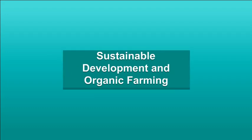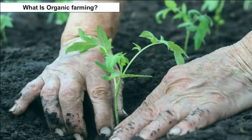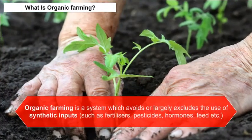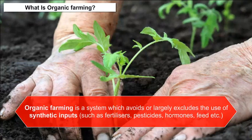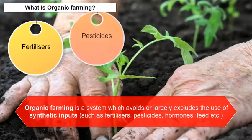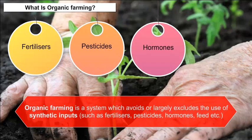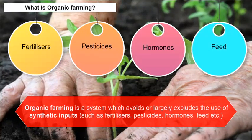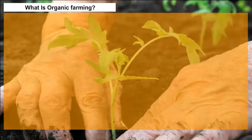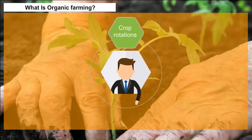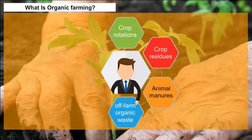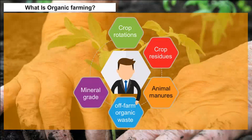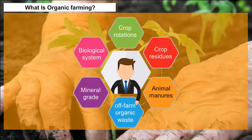Organic Farming is a system which avoids or largely excludes the use of synthetic inputs such as fertilizers, pesticides, hormones, and feed. To the maximum extent feasible, it relies upon crop rotations, crop residues, animal manures, off-farm organic waste, mineral-grade rock additives, and biological systems of nutrient mobilization and plant protection.